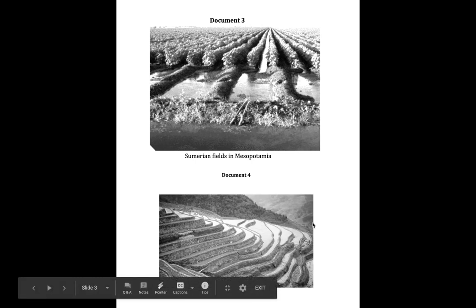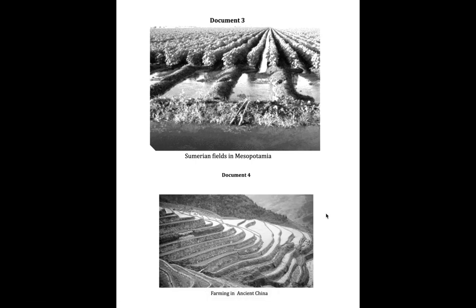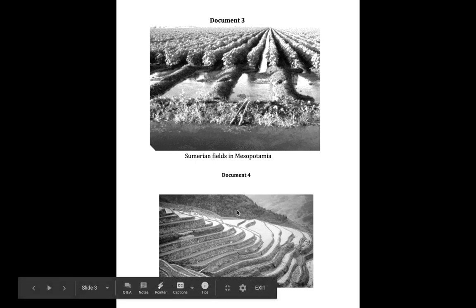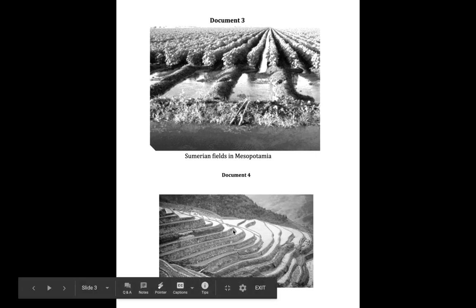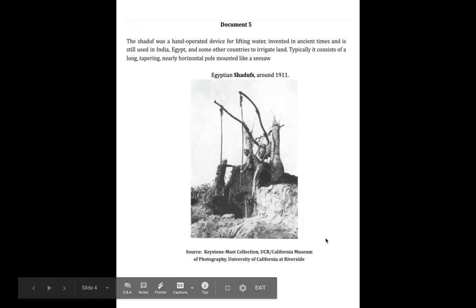Here we have farming in ancient China. This is a mountain — you can tell because there are mountains in the background. This is showing you terrace farming. Ancient Chinese developed the technique of terrace farming.